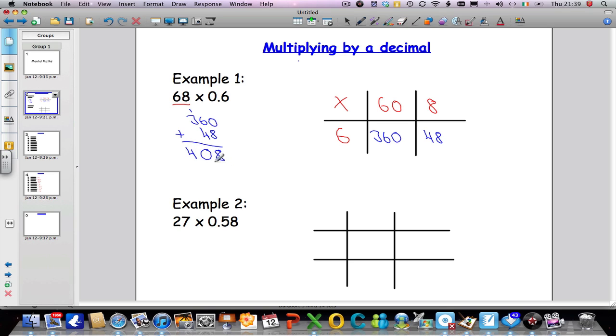Now, we're not quite done just yet. Now we're going to return to our question. And we count the number of decimal places that were in my question. In this question, we had one decimal place. I'm going to highlight it here. We had one decimal place, which means that my answer must have one decimal place also.